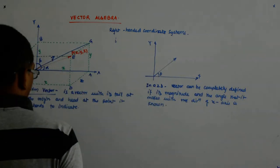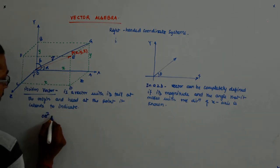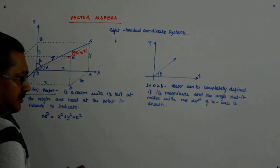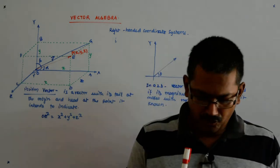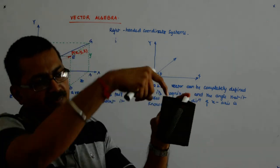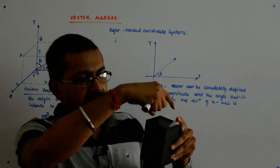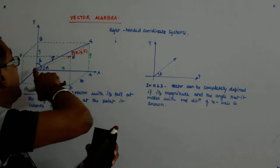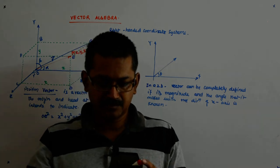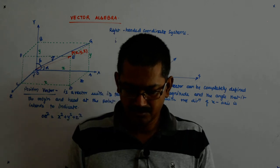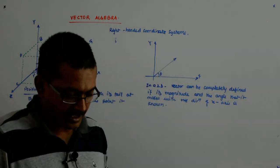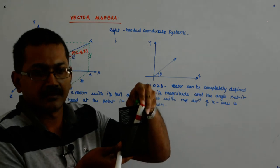We saw that OE² = x² + y² + z². Now, this angle that the vector OE makes with the x-axis is alpha. The blue pen represents x, the red pen represents OE, and the angle between them is alpha. They form a right-angle triangle, with the right angle at the foot of the perpendicular.